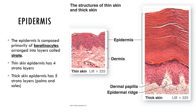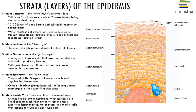Thin skin has four strata layers and covers most of the body surface. Thick skin is only found on the palms of the hands and the soles of the feet, and it possesses five strata including the stratum lucidum. The layers of the epidermis are: the stratum corneum (most superficial layer), the stratum lucidum (found only in thick skin, a clear layer), the stratum granulosum (granule layer), the stratum spinosum (spiny layer), and the stratum basale, which is the deepest epidermal layer, firmly attached to the dermis below, and consists of a single row of stem cells.